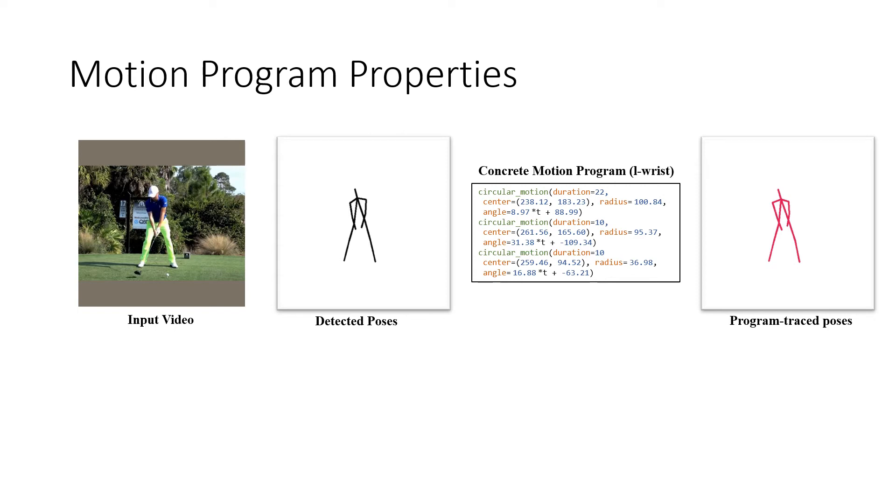Here is an example. On the left, we have the input video and the detected poses. On the right, you can see the program synthesized for the left wrist keypoint. On the far right, we have the program traced pose. There is only a minor difference between the detected poses and the program synthesized poses.